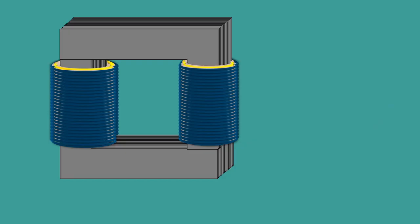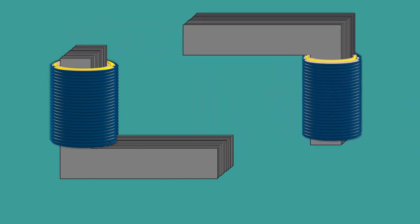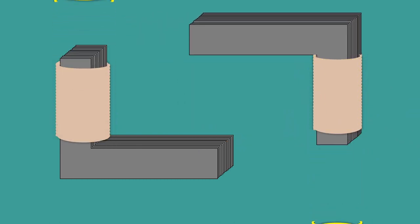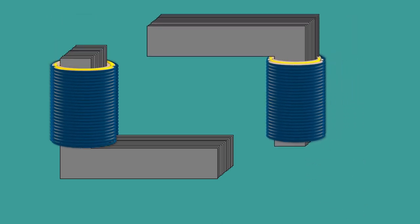The core type transformers are the ones we discussed earlier. Here the windings surround the core. This means the primary and the secondary windings are placed on the side limbs.